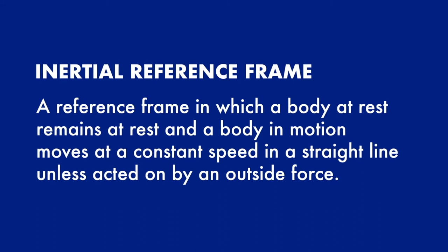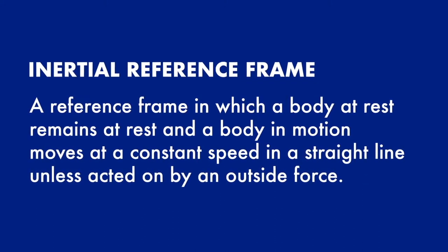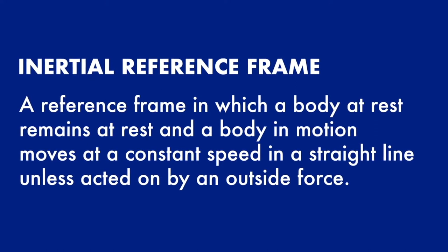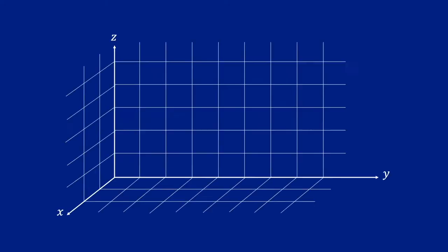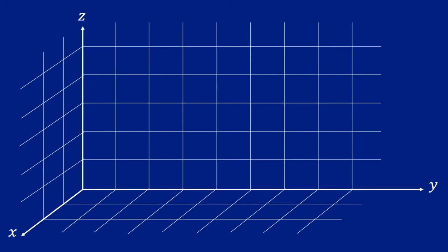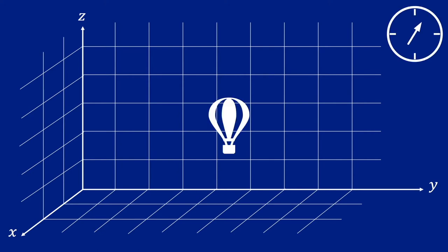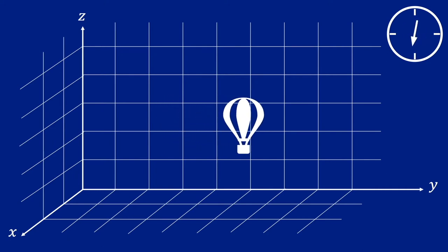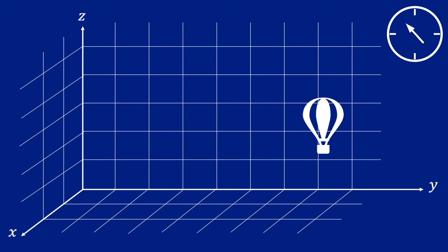An inertial reference frame is a reference frame in which a body at rest remains at rest and a body in motion moves at a constant speed in a straight line unless acted on by an outside force. Consider this imaginary coordinate system, which can represent an indoor laboratory or an actual 3D outdoor space. If we have an object that remains at rest, or moves at a constant speed in a straight line, then this reference frame is an inertial reference frame.